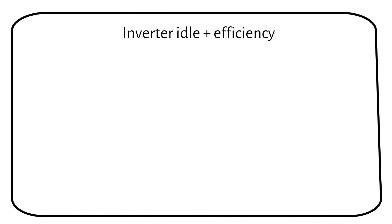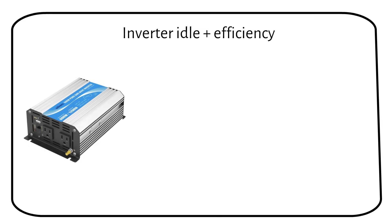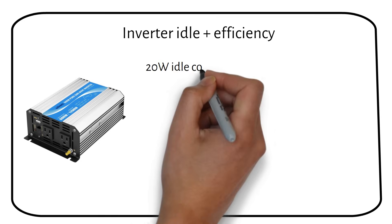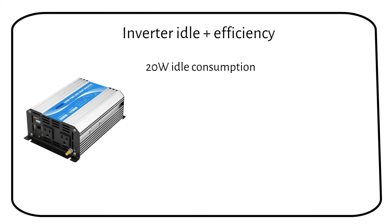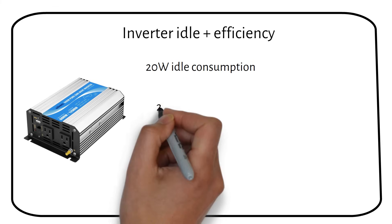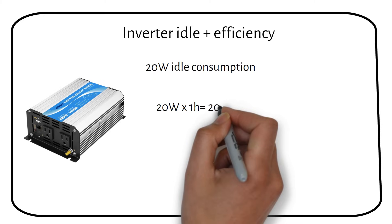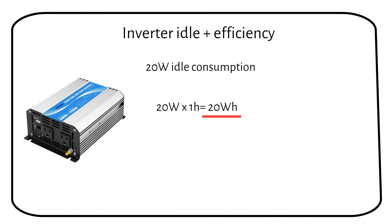What people often forget is the idle consumption and the efficiency of the inverter. My 600 watt inverter has an idle power draw of 20 watts. Now, 20 watts doesn't say us anything on the timescale. That's why we also have to multiply it by 1 hour to get 20 watt hours. We will include idle power consumption in our formula later on.